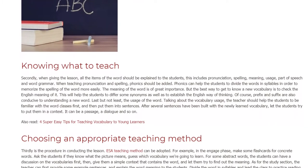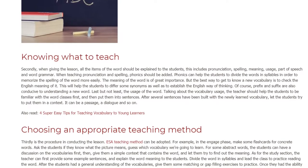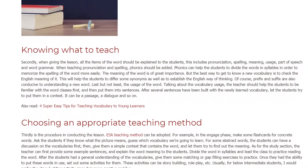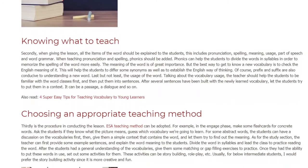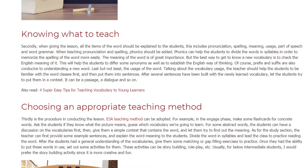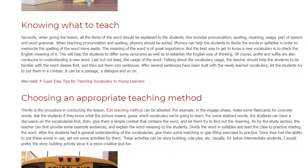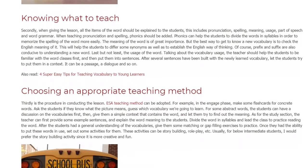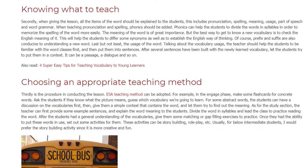Thirdly is the procedure in conducting the lesson. The ESA teaching method can be adopted. For example, in the engage phase, make some flashcards for concrete words and ask the students if they know what the picture means, guessing which vocabulary we're going to learn. For some abstract words, the students can have a discussion on the vocabularies first, then give them a simple context that contains the word and let them try to find out the meaning.